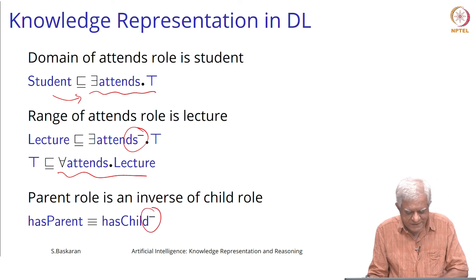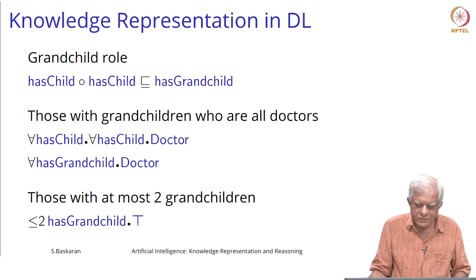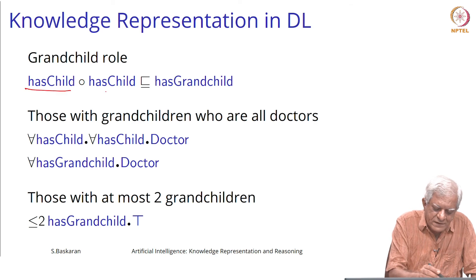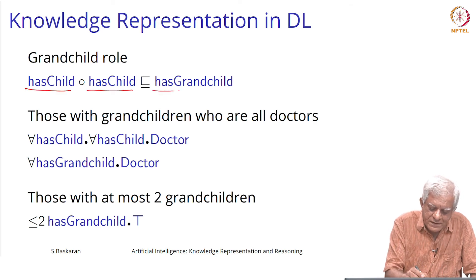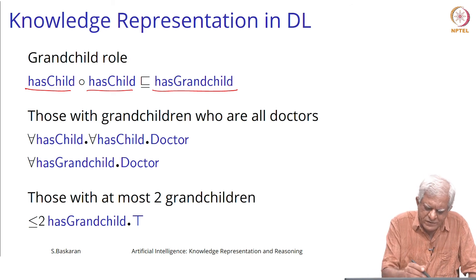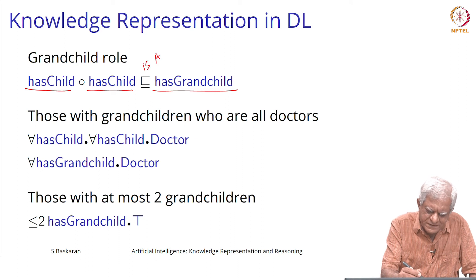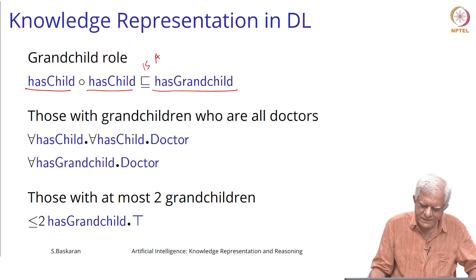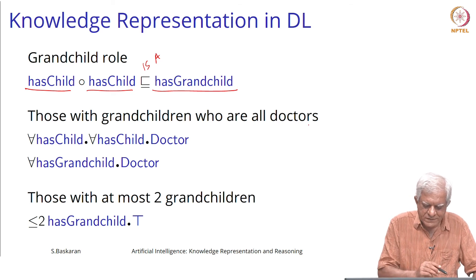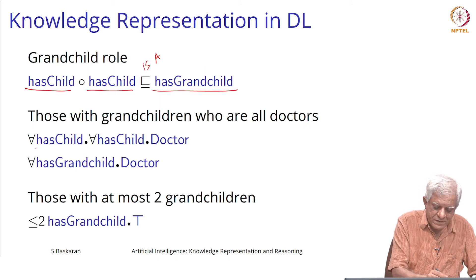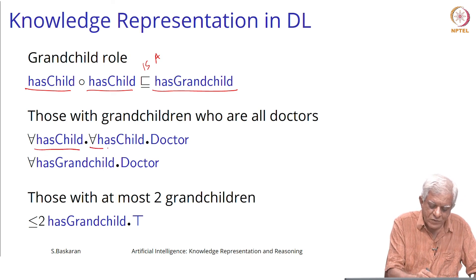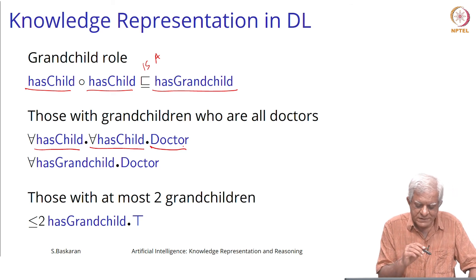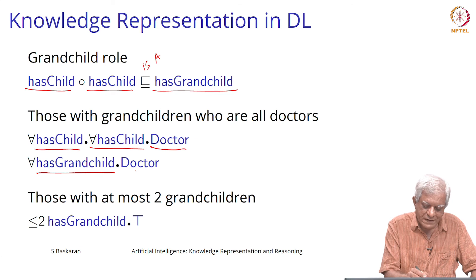Has-parent is inverse of has-child. We have also spoken about grandchild — has-child composed with has-child gives a grandchild role. You can think of this as a kind of subsumption in some sense, because for all x something implies something else essentially. Those with grandchildren who are all doctors: we can say it either by saying all those individuals who have a child who has a child who is a doctor, or all those individuals who have a grandchild who is a doctor.